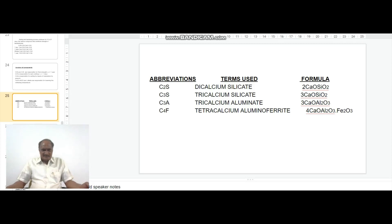C3S is tricalcium silicate having the composition 3CaO·SiO2.